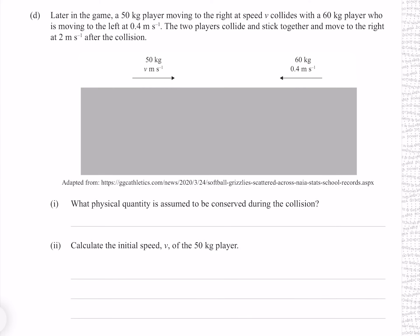Later in the game, a 50 kilogram player moving to the right at speed v collides with a 60 kilogram player moving to the left at 0.4 meters per second. The two players collide and stick together, moving to the right at 2 meters per second after the collision. The physical quantity assumed to be conserved during the collision is momentum, provided there are no external forces.